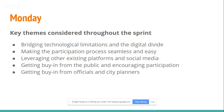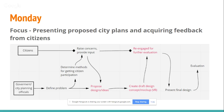Key themes identified throughout the sprint: bridging technological limitations and the digital divide, making the participation process seamless and easy, leveraging existing platforms and social media for appropriate subsections of the population, and getting buy-in from both the public and from officials and city planners. The team focused their map on the presentation of project designs using augmented and virtual reality, and then getting feedback and engagement from citizens for evaluation.